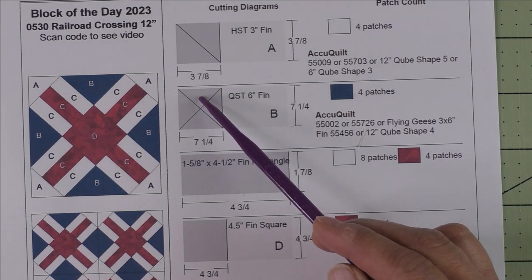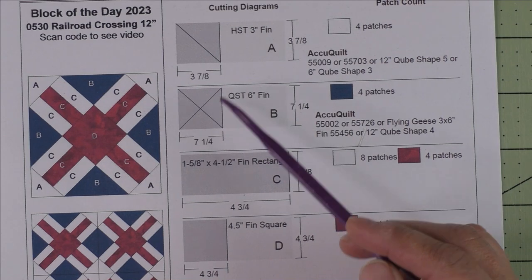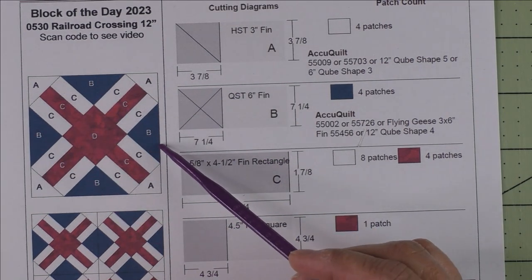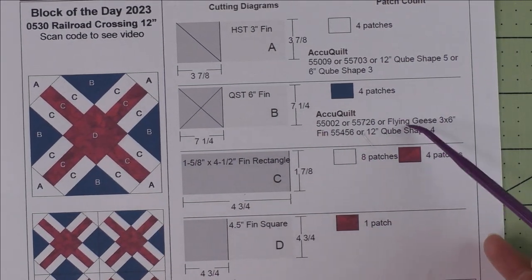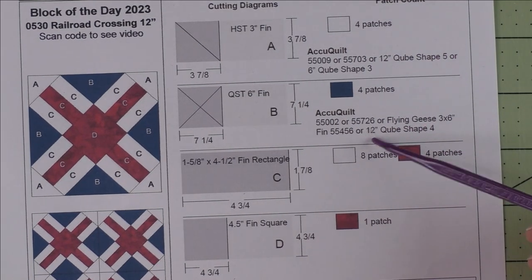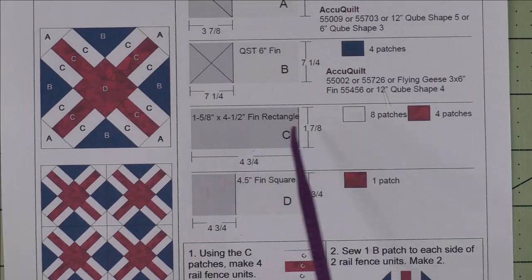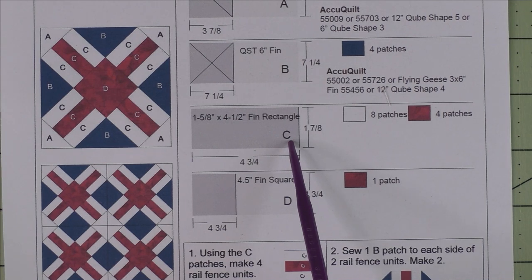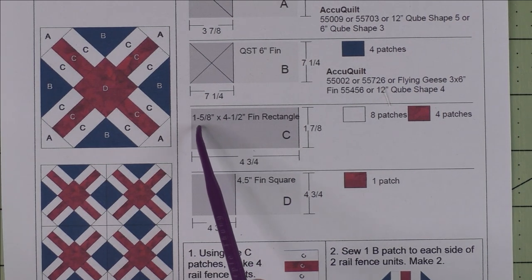One, two, three, four patches here. Here are the AccuQuilt dies that you can use to cut this shape. Patch C is a very odd size rectangle—it is one and five-eighths inch finished by four and a half inch finished rectangle.